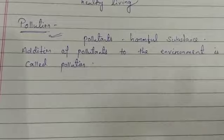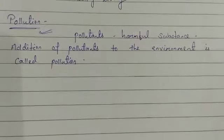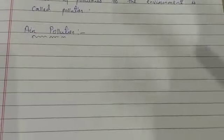Pollution is of three types: air pollution, land pollution, and water pollution. The addition of pollutants such as harmful gases, dust, fumes, or smoke into the air is called air pollution. It can occur due to human activities or natural phenomena like volcanic eruptions, pollen dispersal, and forest fires. It contaminates the air in the environment, and since air is present everywhere, pollutants spread very fast and cause harm to all living organisms.